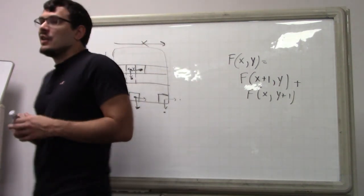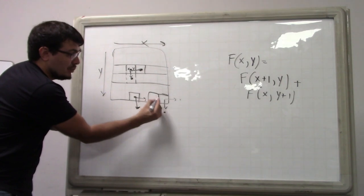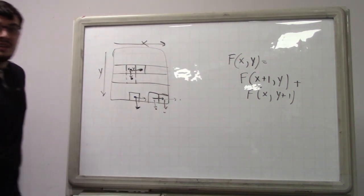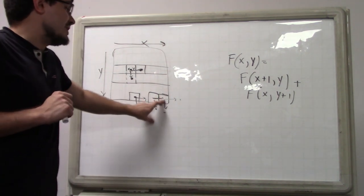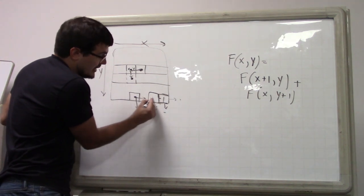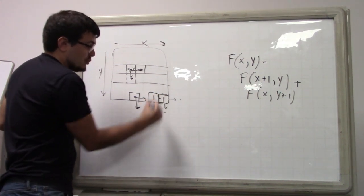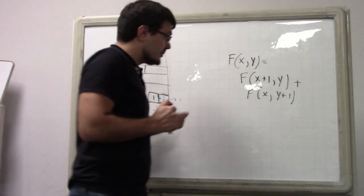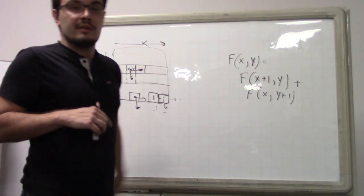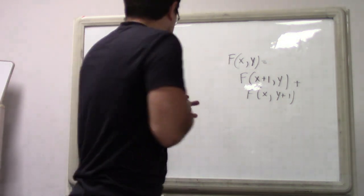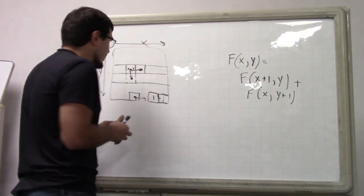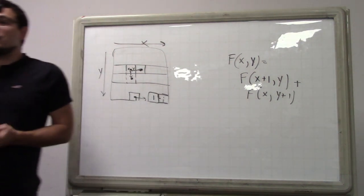The whole formula is: 0 if out of bounds, 0 if the cell is blocked, else F(x, y+1) + F(x+1, y). Dealing with blocked cells is very easy — if you're at a blocked cell your value is 0, and that's all you need. The out-of-bounds check is just a simple comparison of whether x,y exceeds the bounds.